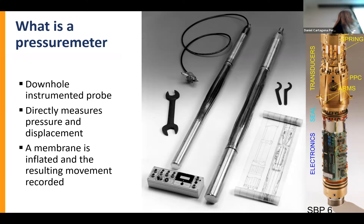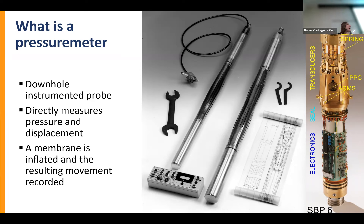One of the direct strain pressuremeters I work with regularly has pore pressure cells, so you can record the pore water response while applying pressure and recording displacement. You can start looking at how a material responds to loading, which becomes very powerful if you're interested in liquefaction - if excess pore water pressure is going to be generated when pressure is held constant. Pore pressure cells are useful, but a pressuremeter is really just a very well-instrumented fancy balloon.